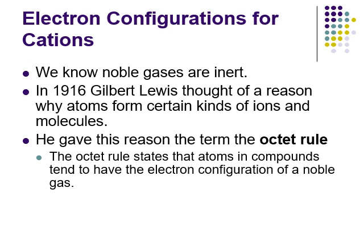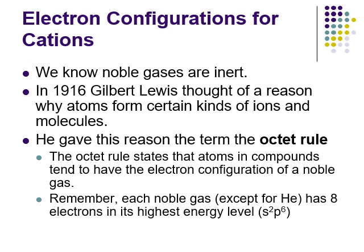Each noble gas, with the exception of helium, has eight valence electrons - something like S2, P6 - which is what leads us to the term 'octet.' Atoms of metals obey the octet rule by losing electrons, while atoms of non-metals obey the octet rule by gaining or sharing electrons. Only non-metals can share, and it's that sharing that gives us the covalent bond we'll talk about in the next chapter.